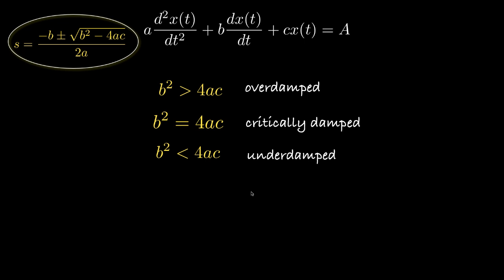In summary, here are the three situations. When b squared is greater than 4ac, we refer to the natural response as an overdamped system. When b squared is equal to 4ac, we call that critically damped. And when b squared is less than 4ac, we call that underdamped. These expressions of damping — overdamped, critically damped, and underdamped — refer to how the solution moves from the initial conditions to the final value.